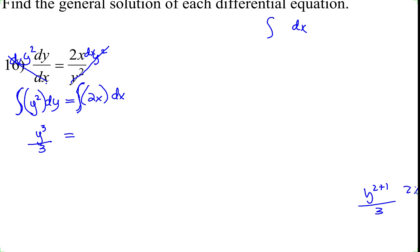On the right side, 2x to the power of 1. We add 1, divide by 2, the 2's cancel. The right side is x squared. We do add the C here.